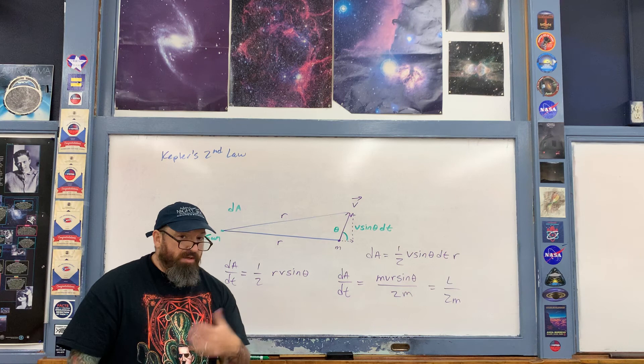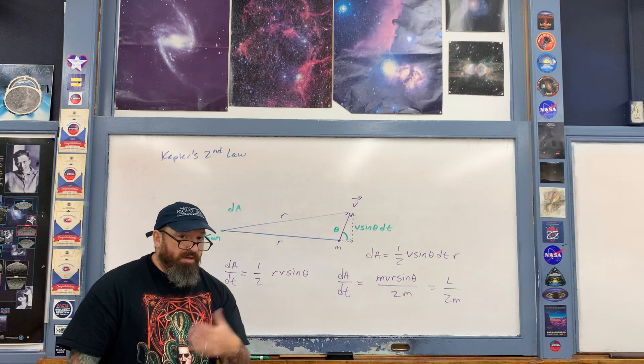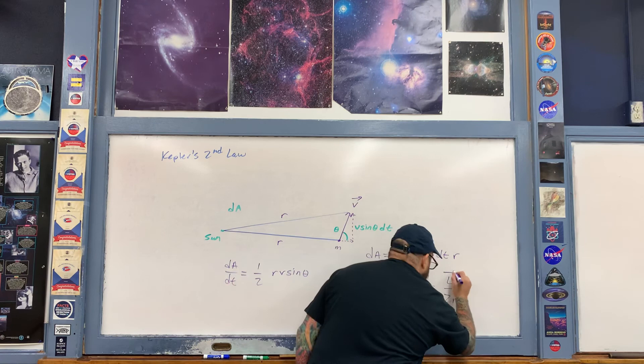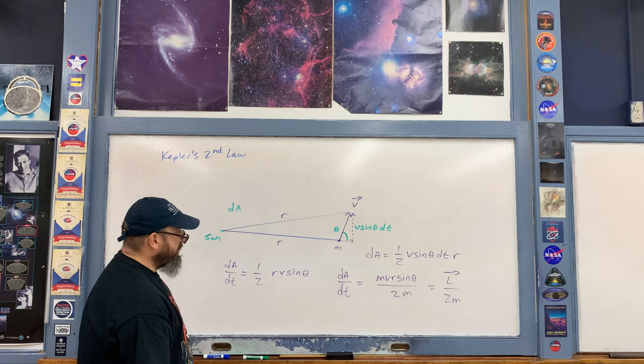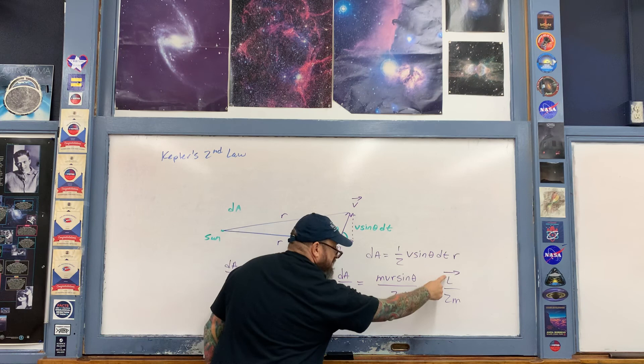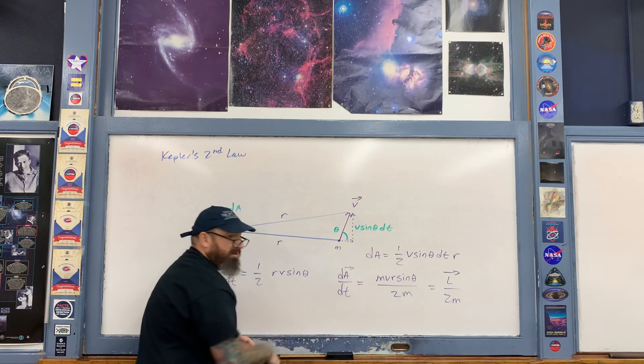One last point: recall that angular momentum L is a vector. As the planet orbits counterclockwise, its angular momentum vector points out of the board. Since L is a vector, this means area must also be a vector quantity. We'll explore how area is a vector when we get to electricity and magnetism.